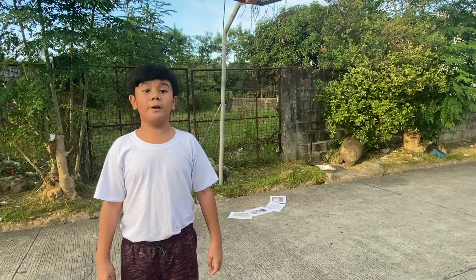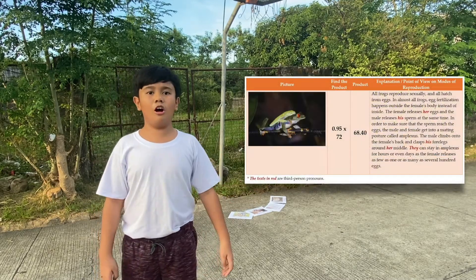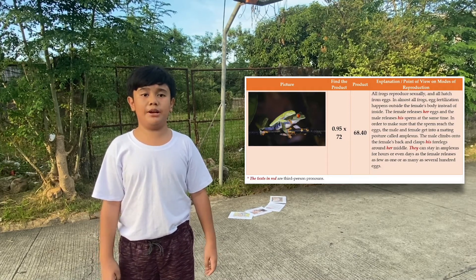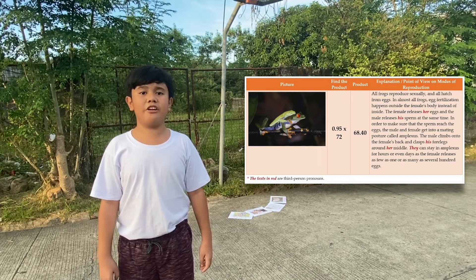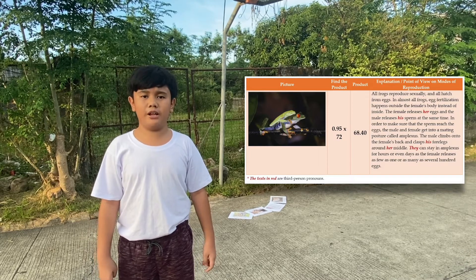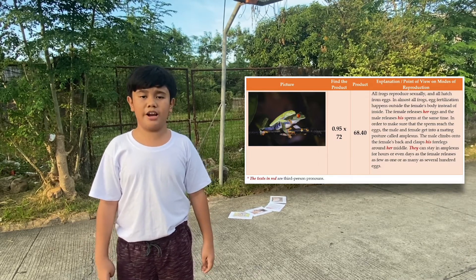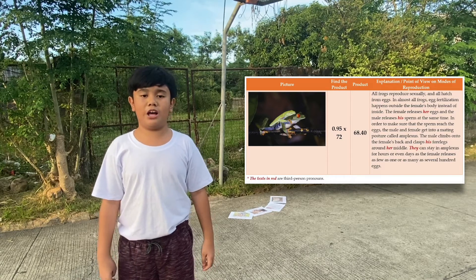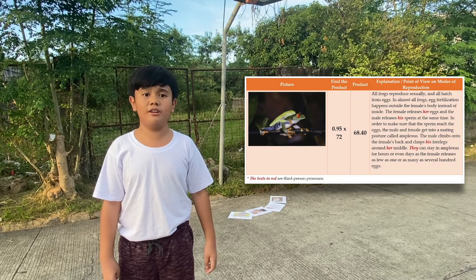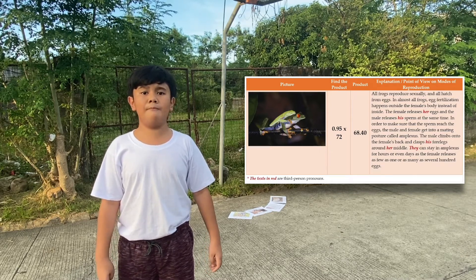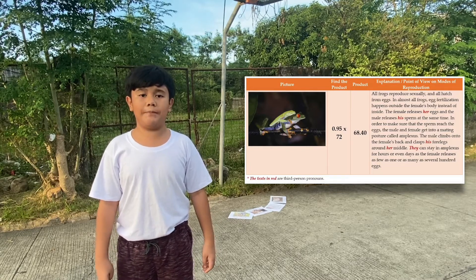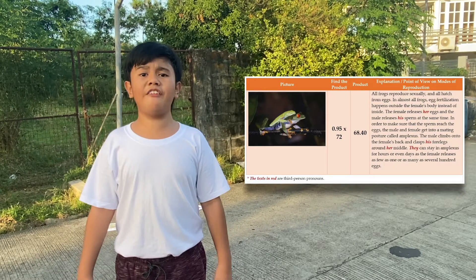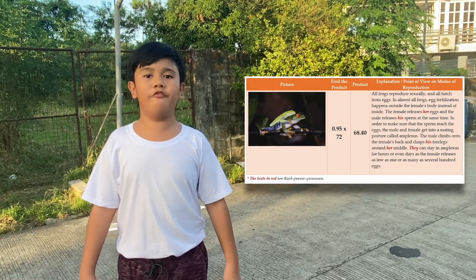That was a good shot! The ball fell on a picture of the frog. All frogs reproduce sexually and all hatch with eggs. In almost all frogs, egg fertilization happens outside of the female's body instead of inside. The female releases her eggs and the male releases his sperm at the same time. The male and the female get into a meeting posture called a plexus. The male climbs onto the female's back and clasps his forelegs around her middle. They can stay in a plexus for hours or even days as the female releases as few as one or as many as several hundred eggs. For the given decimals, ninety-five hundredths times seventy-three is equal to sixty-eight and forty hundredths.